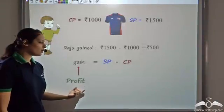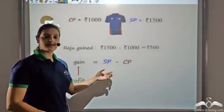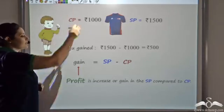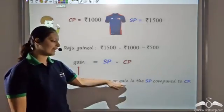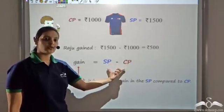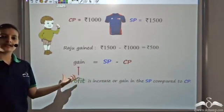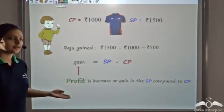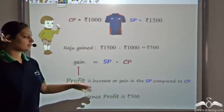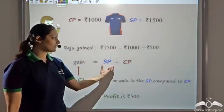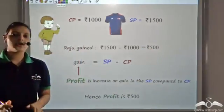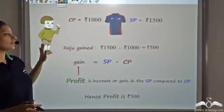So what is profit? Profit is the increase in your selling price compared to your cost price. It is the difference of the two — SP minus CP — which gives you the gain, commonly called profit. In this transaction, profit turns out to be 1500 minus 1000, which is 500 rupees — that is the profit of Raju.